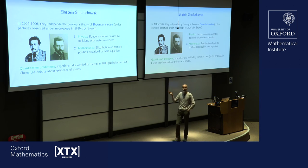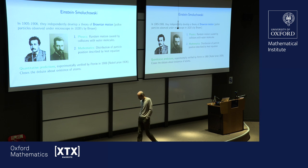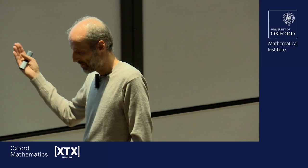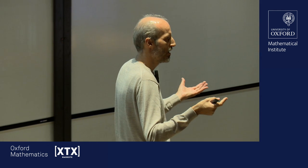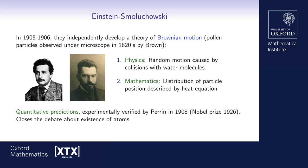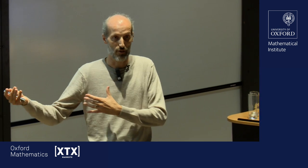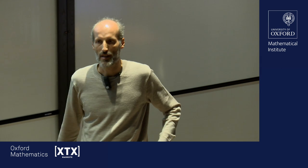Why was this experiment important? Einstein and Smoluchowski came not just with a qualitative description and the heat equation, but even with predictions for the coefficients that show up in the heat equation — it was very quantitative. So in principle you can actually do an experiment and check whether the prediction really matches.